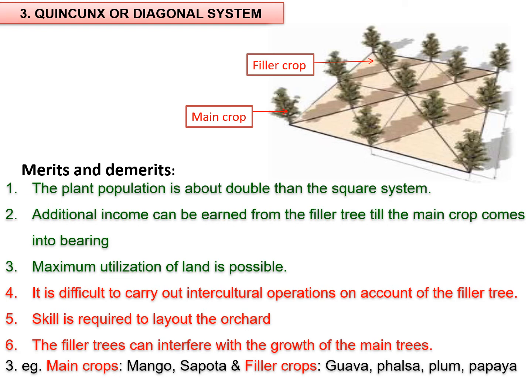The filler plant should be removed if it suppresses the growth of the main plant. The merits of this system are: the plant population is about double that of the square system, additional income can be earned from the filler tree until the main crop comes into bearing, and maximum utilization of the land is possible when land is expensive or a limiting factor.